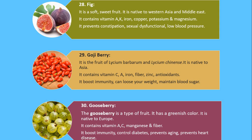Number 30. Gooseberry. The gooseberry is a type of fruit. It has a greenish color. It is native to Europe. It contains vitamin A, C, manganese and fiber. It boosts immunity, controls diabetes, prevents aging, and prevents heart disease.